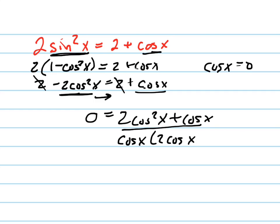And the second thing is, you would forget that that's one of your solutions, which you're going to see in just a second. So factoring out a cosine x gives me this. And now I'm going to set each of these factors equal to 0. So I have cosine of x equals 0, and I have 2 cosine of x plus 1 equals 0.